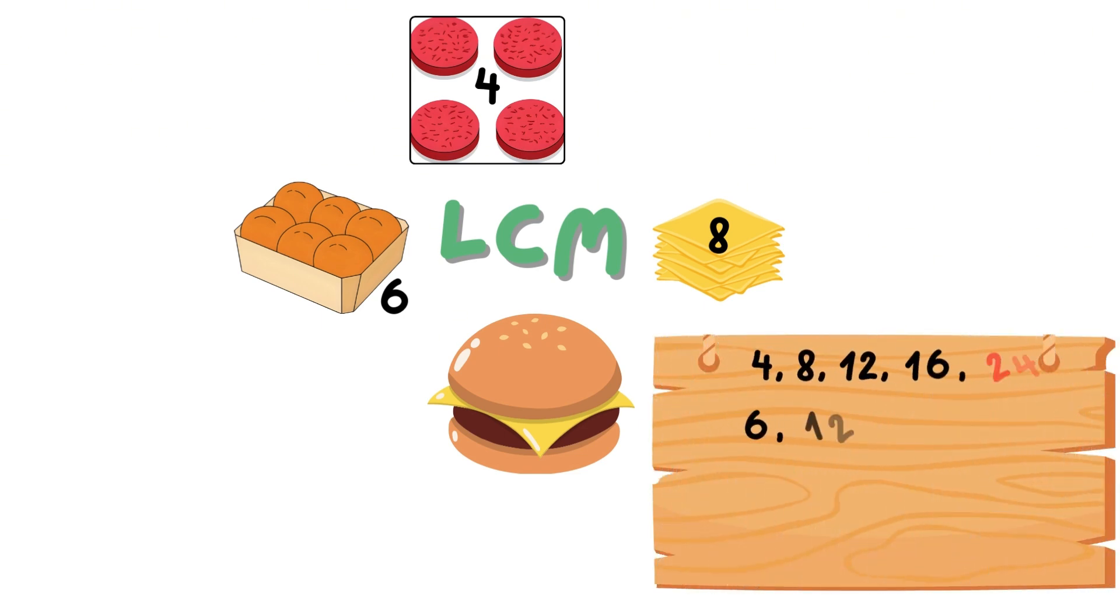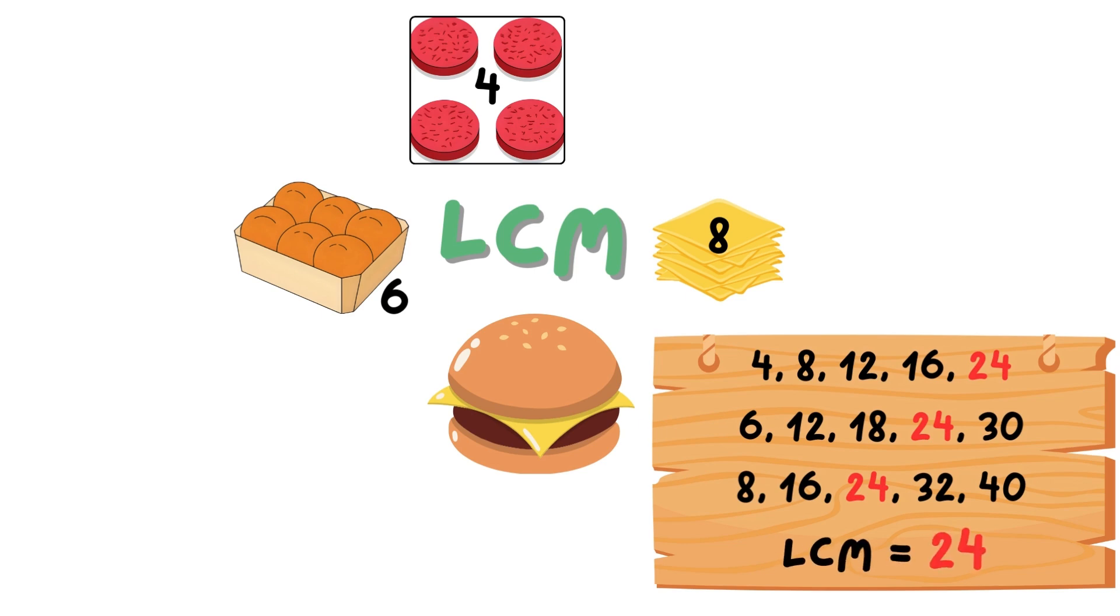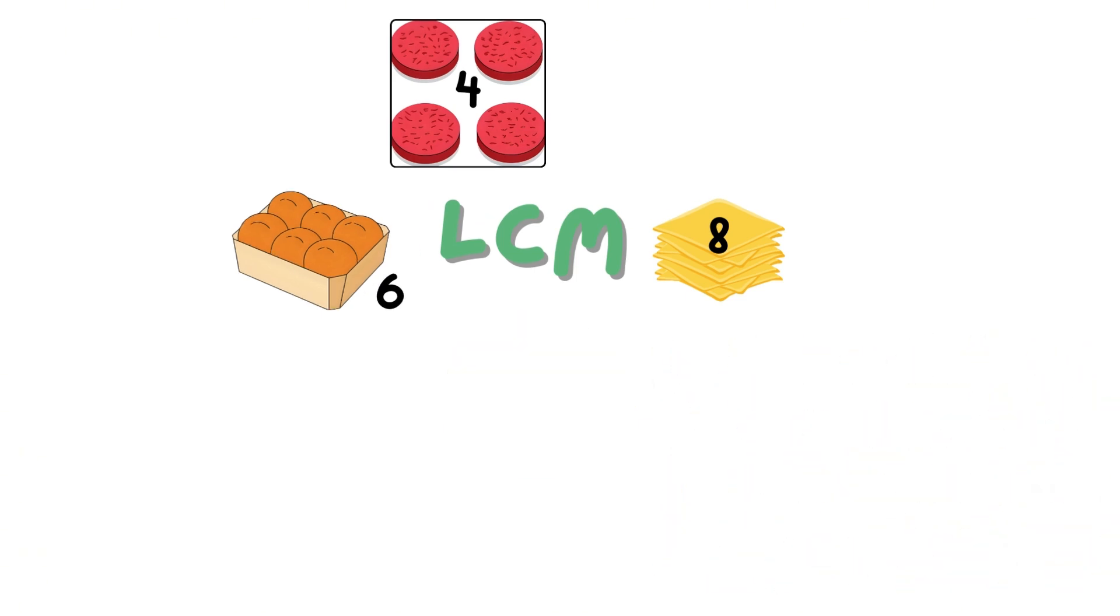List the multiples of 4, 6 and 8 and find the lowest common multiple which is 24. So the least number of cheeseburgers you can make without waste is 24.